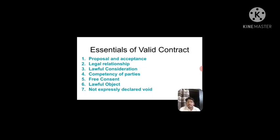Now we are understanding the essentials of a valid contract. The essentials are: first, proposal and acceptance; second, legal relationship; third, lawful consideration; fourth, competency of parties; fifth, free consent; sixth, lawful object; and seventh, not expressly declared to be void.